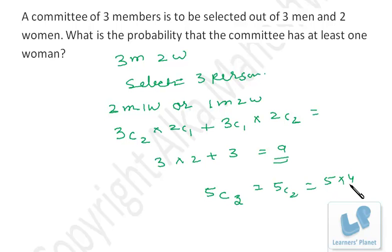That is 5×4 by 2, that's 10. So these are the total number of cases and these are the favorable cases. So what will be the probability of this event? That is favorable cases by total number of cases, that is 9 by 10. So this will be the answer to this problem.